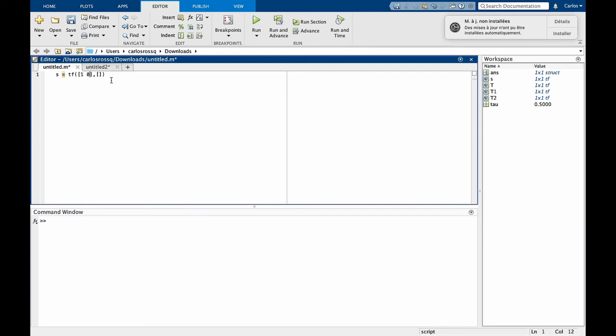If you want s to be our transfer function, we have to give the coefficients of the numerator as 1 and 0, so we have s plus 0, and in the denominator we have simply 1, so we have s plus 0 divided by 1. We can now define our transfer function T as a function of s, so T is also a transfer function, and when you run this code we see the transfer function shown here.